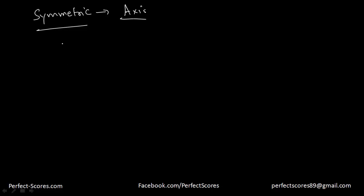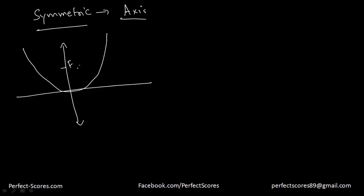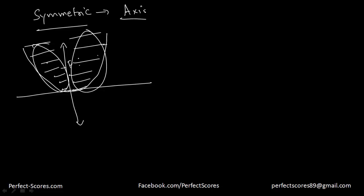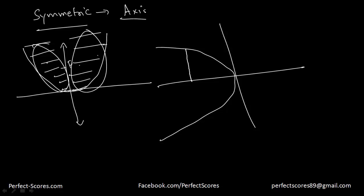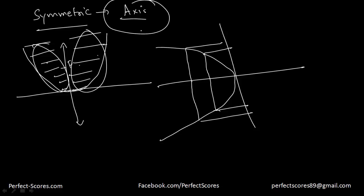Another important thing to understand about parabolas is that they are symmetric with respect to the axis. So if this is a parabola and this is the line of axis, the two halves are like twin brothers or twin sisters — this part is exactly equal to this part. The distance from one side to the axis equals the distance from the other side to the axis. So parabolas are actually symmetric with respect to their line of axis.